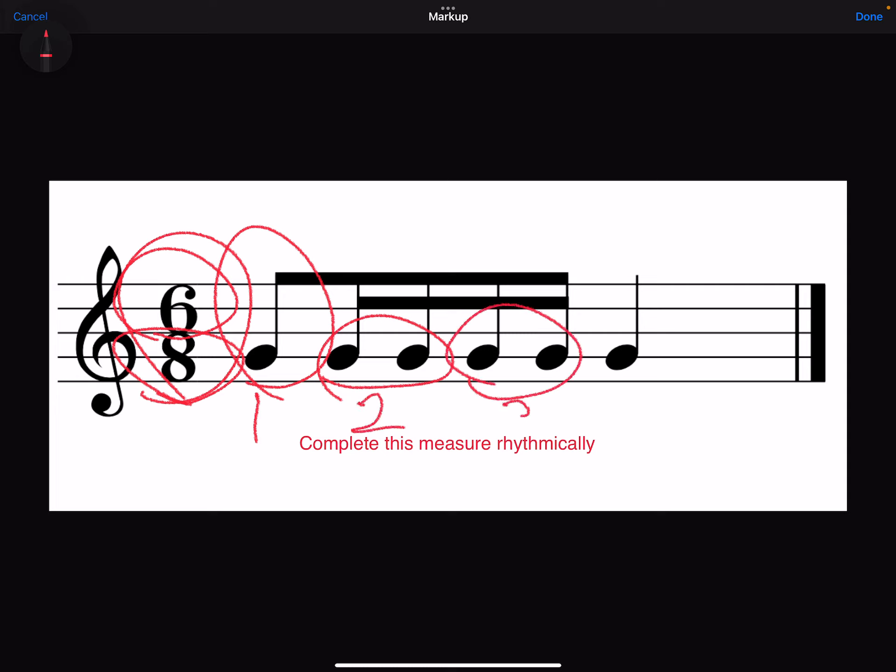Our 3rd beat would be here. The 4th note here is 2 8th notes in value. So the 4th and the 5th beats are here. And what are we missing? We are missing the 6th beat or 1 8th note.